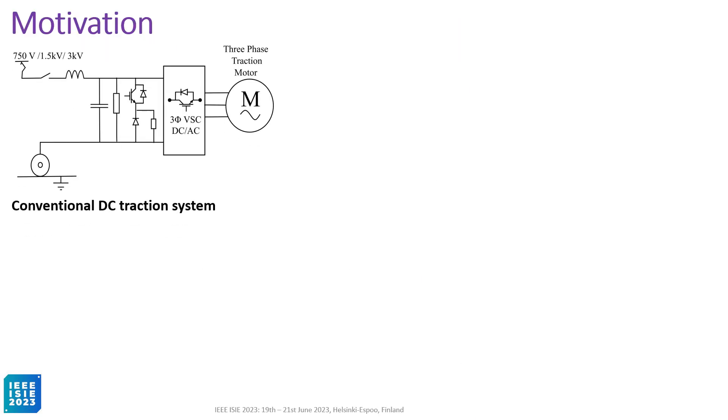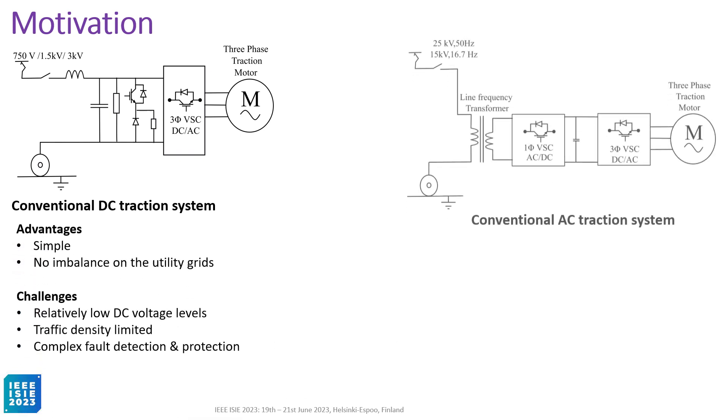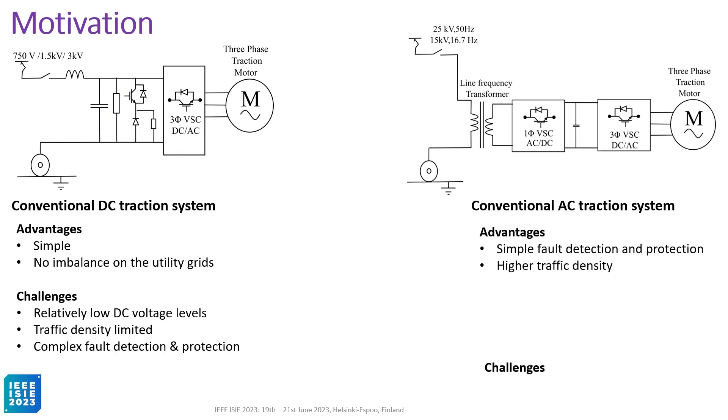The motivation of this work is to find a suitable topology for the future MVDC traction system. Generally, there are two types of traction system, conventional DC traction system and conventional AC traction system. These are the advantages and disadvantages of both systems.